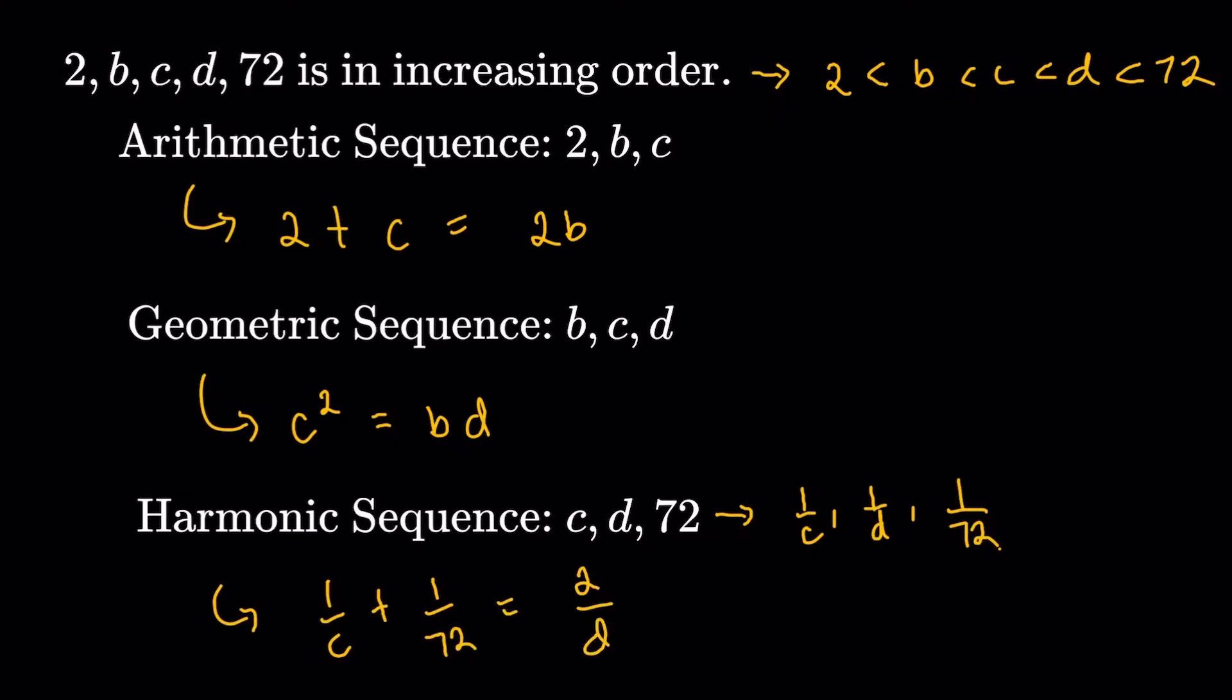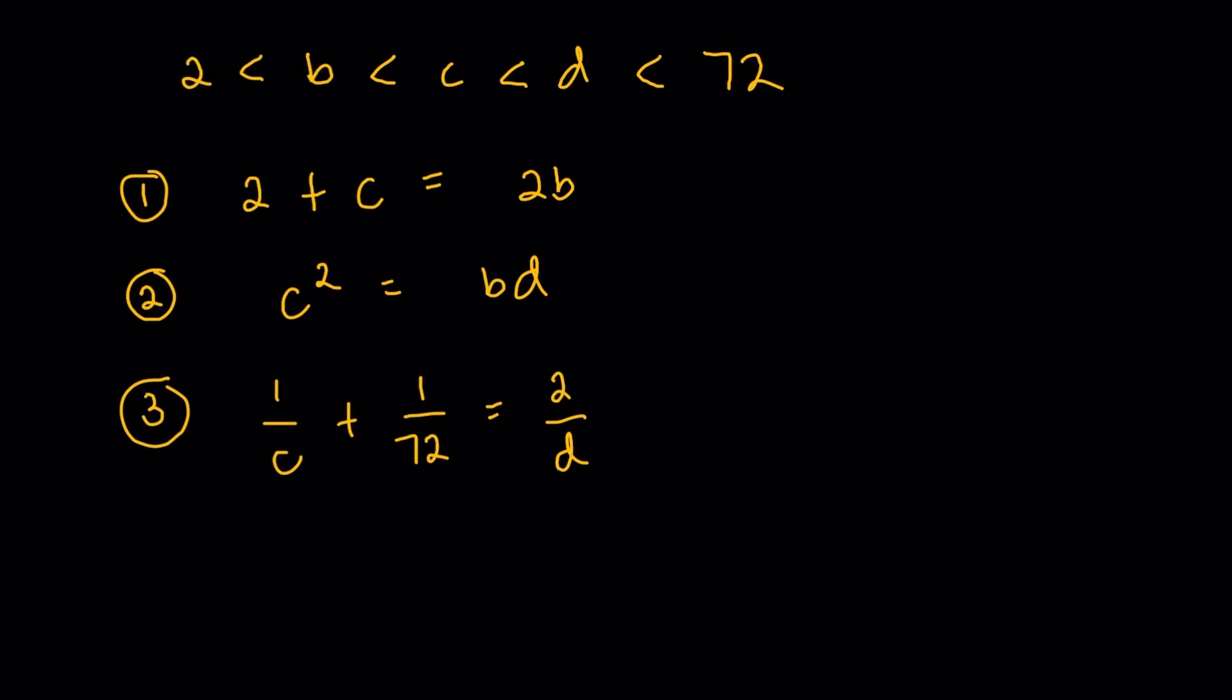So we do have these four mathematical expressions and equations. And I believe what we have to do here, we do have three equations and we do have three variables, B, C, and D. So I think that's sufficient enough. And I think the conditions here are just going to give us a unique triple of values for B, C, and D.